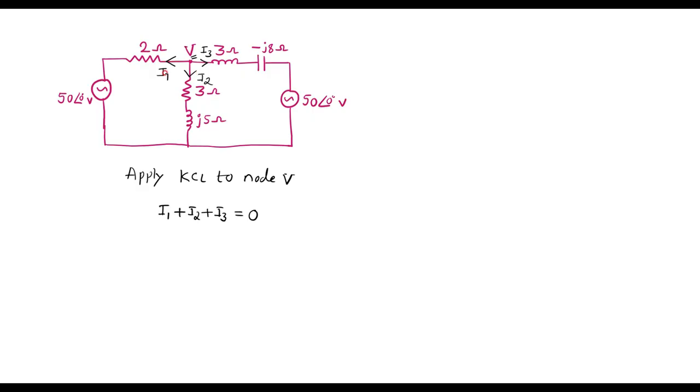I1 is the current flowing from V towards 50 volt source. So we should write I1 as potential difference between these two divided by resistance, that is V minus 50 divided by 2. Plus I2 is nothing but V divided by 3 plus J5.